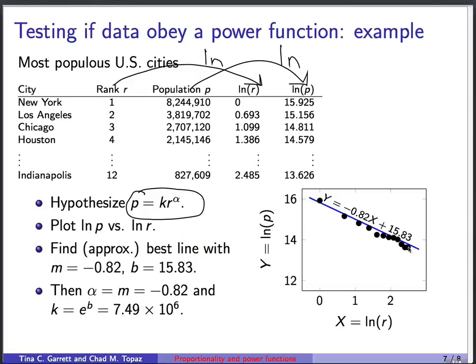And we say, well, they don't look perfectly like a line, but they look maybe approximately linear. And so using a computer, we can find the equation of the line that comes closest to passing through all those points. And it's this line here. And the slope turns out to be minus 0.82. And the y-intercept is 15.83.